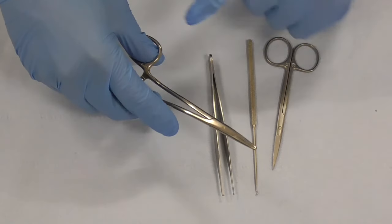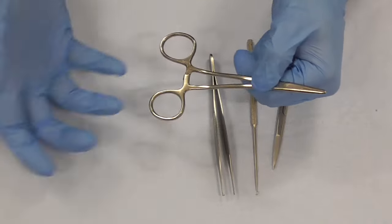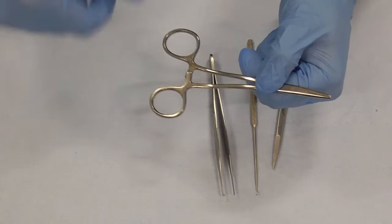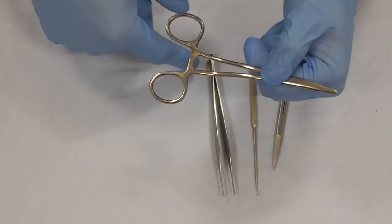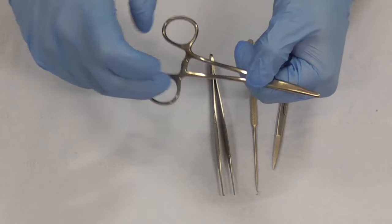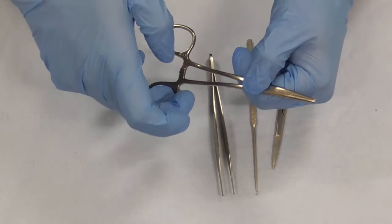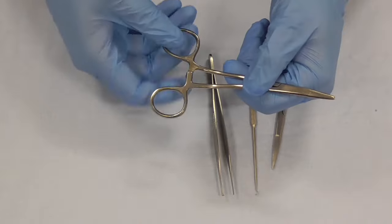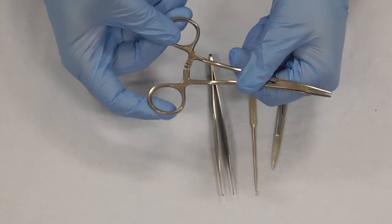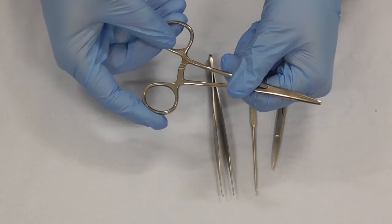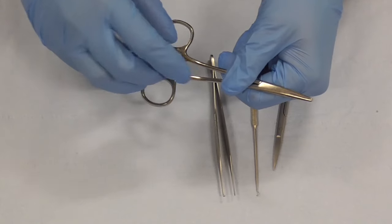When you want to release it you need to push, if I may take my hands away, push the one that your thumb is in away from you and the ring that your ring finger is in pull it towards you so that you open it like that. That takes a little bit of practice but once you've done it a few times you will get the hang of it.